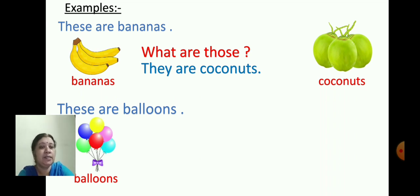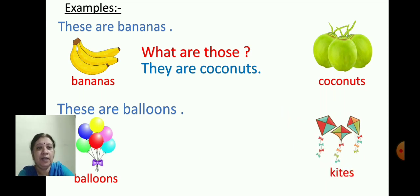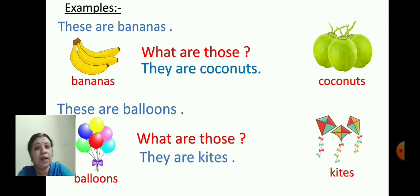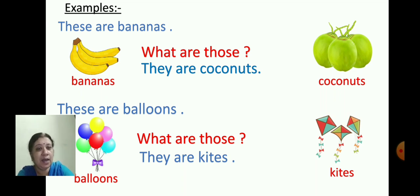Now see the next picture — kites. We will write the question: what are those? The answer will be: they are kites. K-I-T-E-S — kites. Understood how to read and write question and answer?